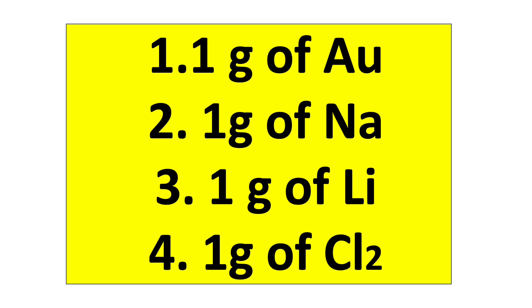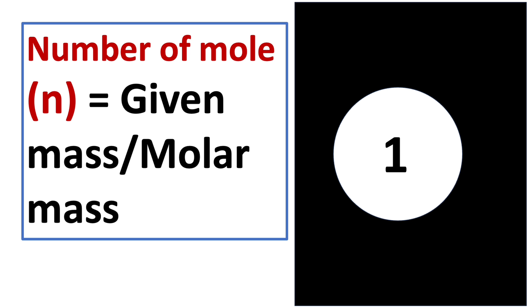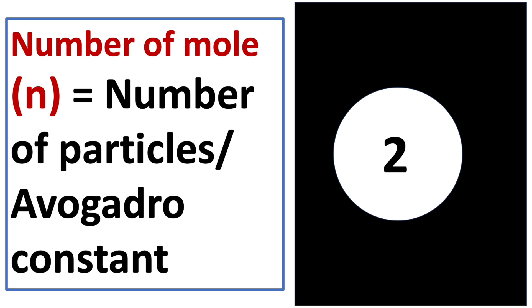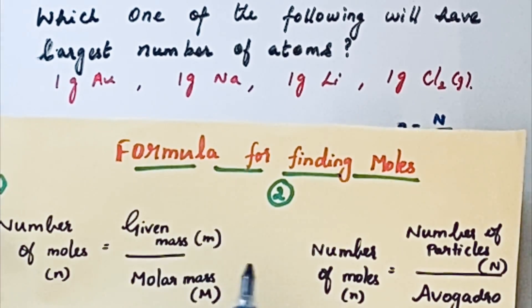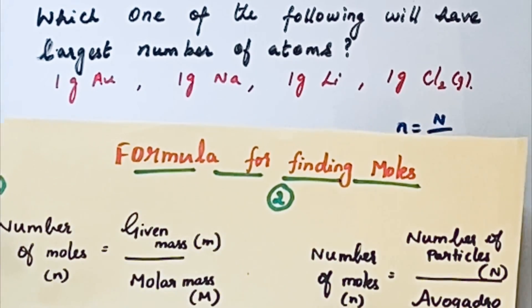For any mole-related or number of atoms questions, we should remember only two formulas. The first one is number of moles equals given mass by molar mass. The other one is number of moles equals number of particles by Avogadro number. Here, given mass is provided and they ask for the number of particles, so there is a need to use these two formulas.